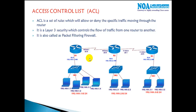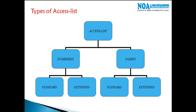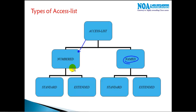Let's understand the different types of ACLs. We have two kinds: named ACLs and numbered ACLs. Both are functionally the same — the only difference is how the rules are identified.